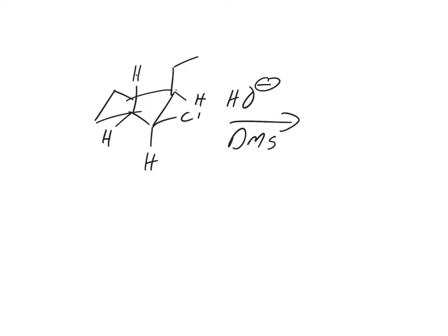So this has a chair structure, and they're showing this. The reaction is OH- and DMSO. And the question says, draw the major E2 reaction product formed when cis-1-chloro-2-ethyl-cyclohexane reacts with hydroxide in DMSO.